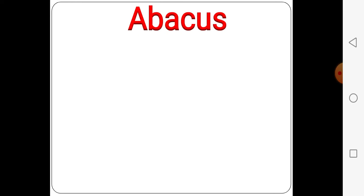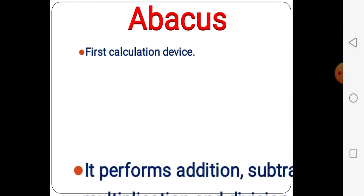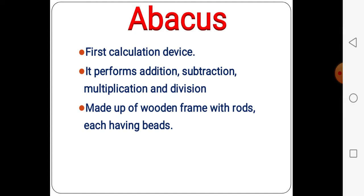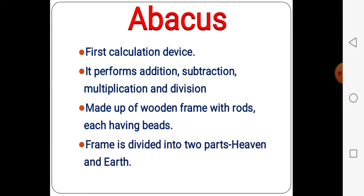The first one is the abacus. The abacus was the first calculating device. It was developed by China 3000 years ago. It performs addition, subtraction, multiplication and division. The abacus is made up of a wooden frame with rods, each having beads. With the use of these beads, they are doing the calculation. The frame is divided into two parts: Heaven and Earth.